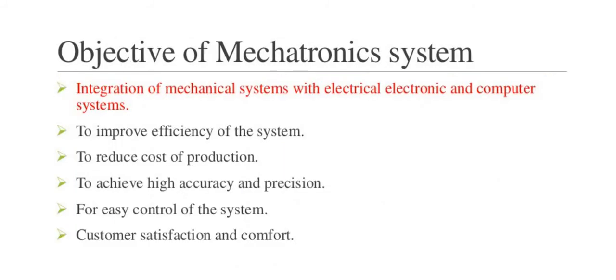The objectives of the mechatronics system involve integration of mechanical systems with electrical, electronics, and computer systems. The first objective is to improve the efficiency of the system — efficiency should increase as per requirements. Next is to reduce the cost of production. Then, to achieve high accuracy and precision — accuracy is very important because if accuracy is high, the products will be good and accurate. Next is easy control of the system. And finally, customer satisfaction and comfort. These are the objectives of the mechatronics system.